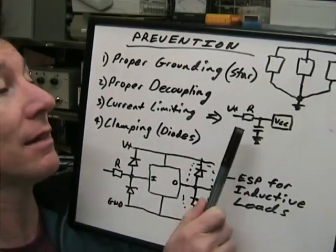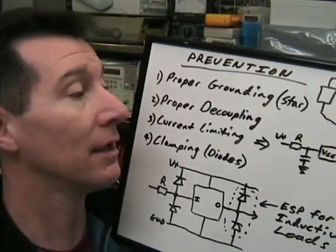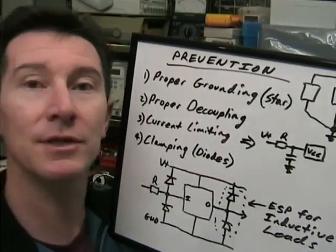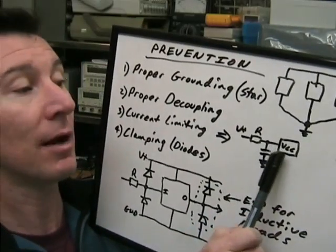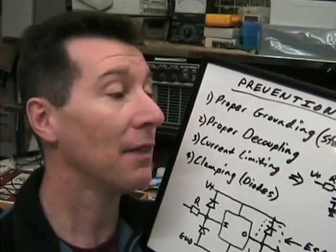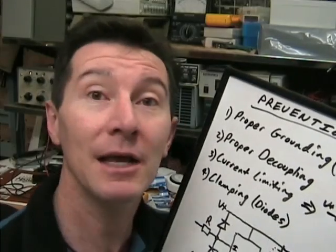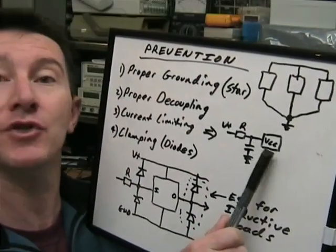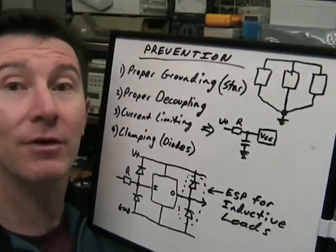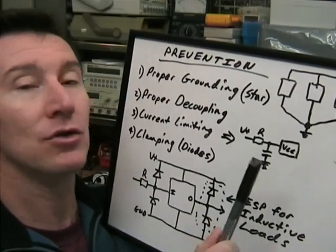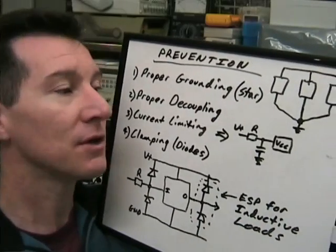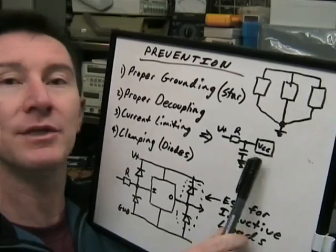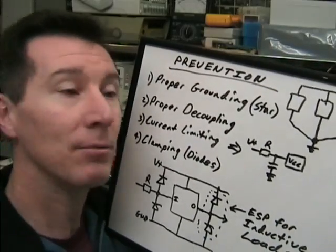Three, you can current limit your power supply. If you can put a series resistor in series with the power supply of your chip. And that won't prevent SCR latch up. But it will prevent you actually destroying the chip from excess current. But that has an issue for high frequency performance. So it's really only for low frequency or DC parts like a DC op amp or something like that.